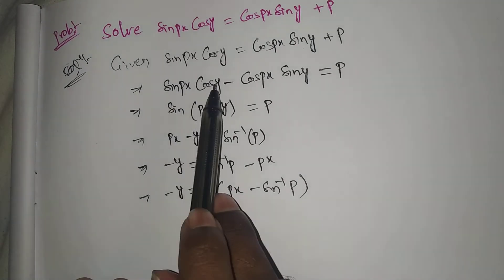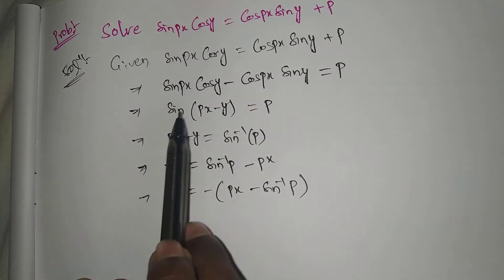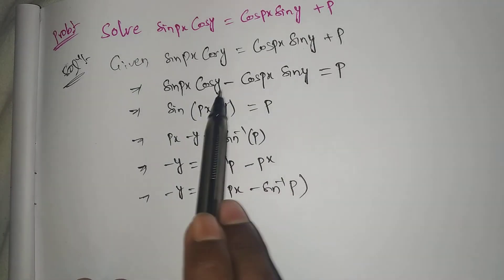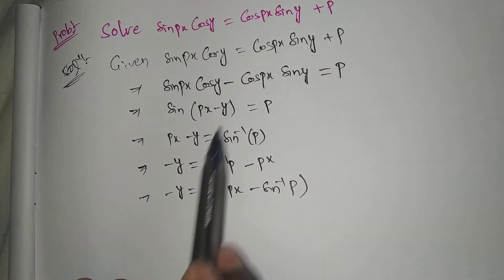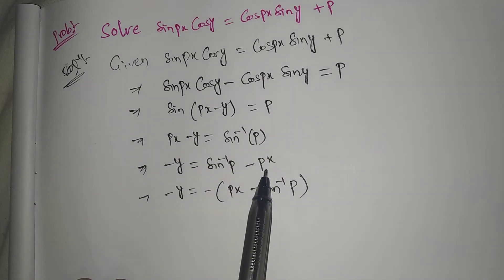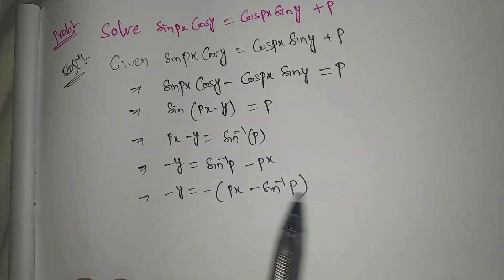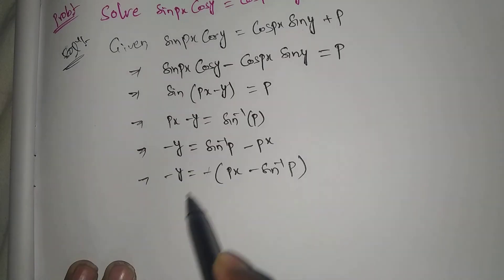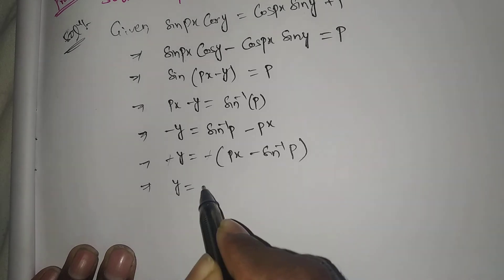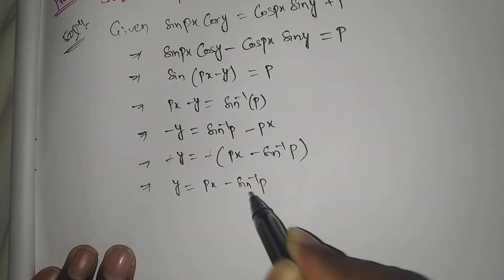The formula sin(a)cos(b) minus cos(a)sin(b) = sin(a minus b) has been applied here. The sin inverse comes out from sin, and the px comes out from inside. The minus signs cancel, so we get y = px minus sin inverse(p).